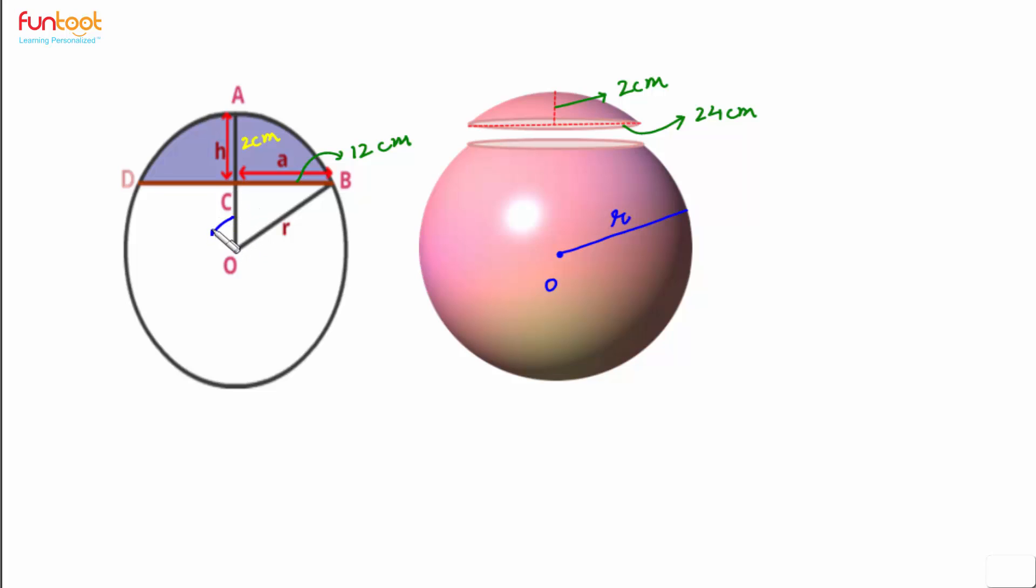Also, OA will be the radius. And if AC is 2 centimeters, then length OC will be R minus 2 centimeters. Now if we consider right triangle BCO, in this right triangle we have BC equal to 12 centimeters, CO equal to R minus 2 centimeters, and OB as R.